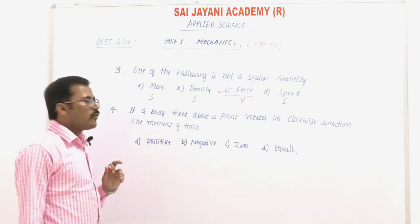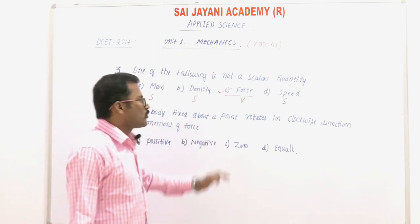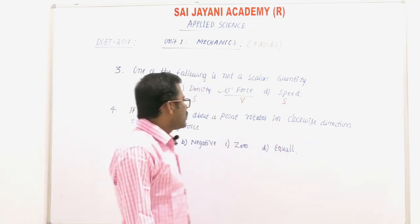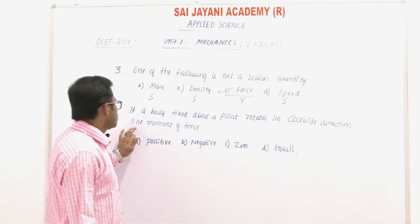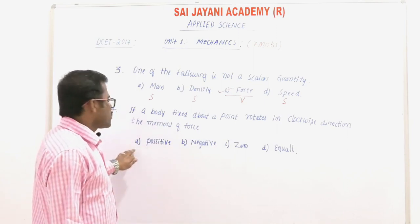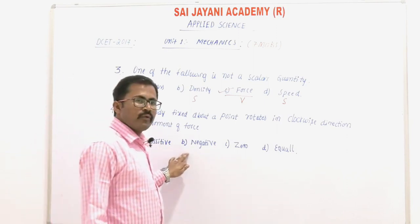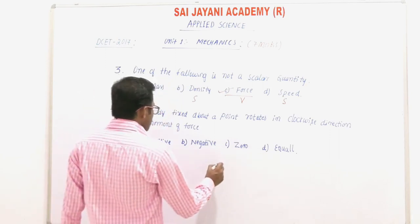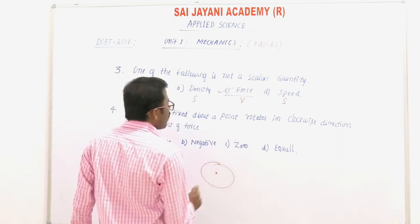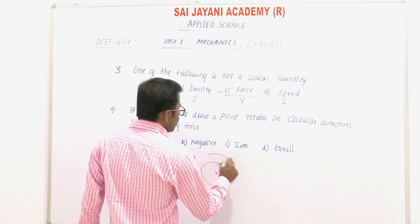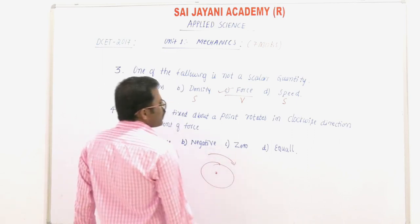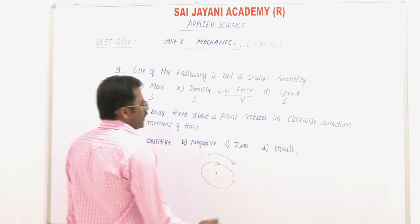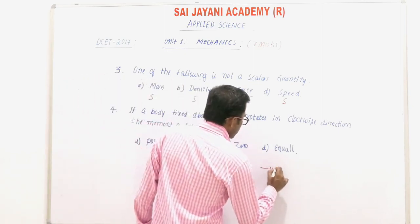Question number 4: if a body fixed about a point rotates in clockwise direction, the moment of force is — option A: positive, option B: negative, option C: 0, option D: equal. If a body fixed about a point rotates in clockwise direction, then the moment of force is negative.